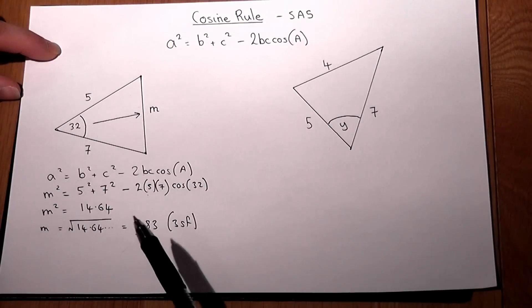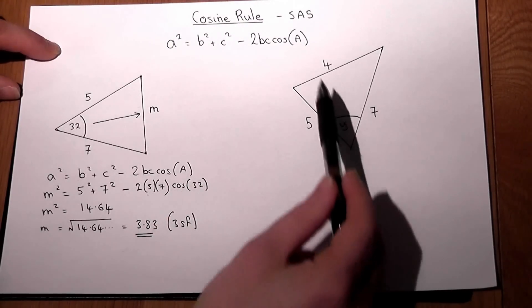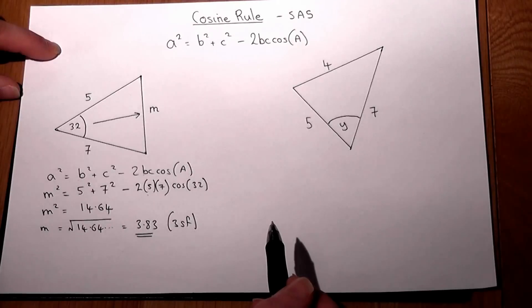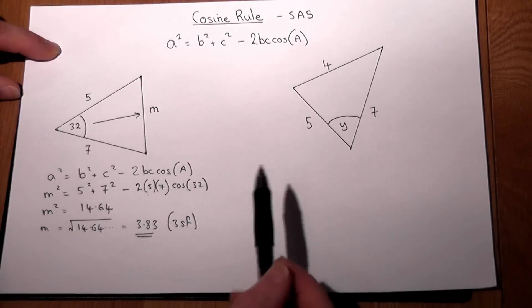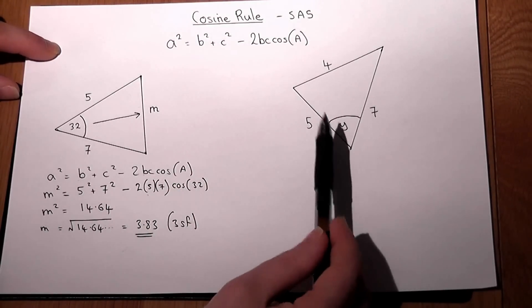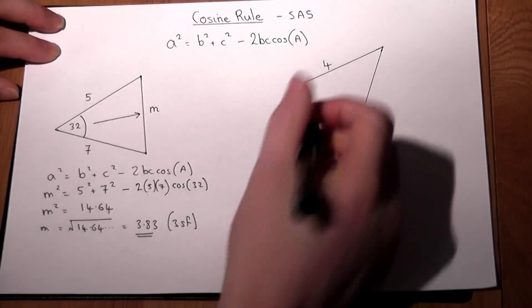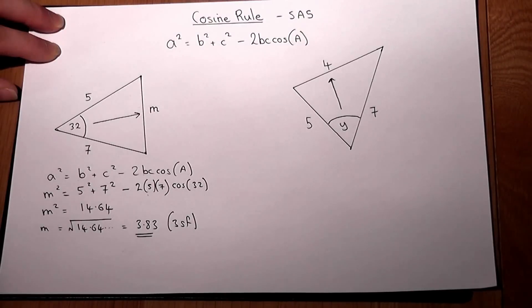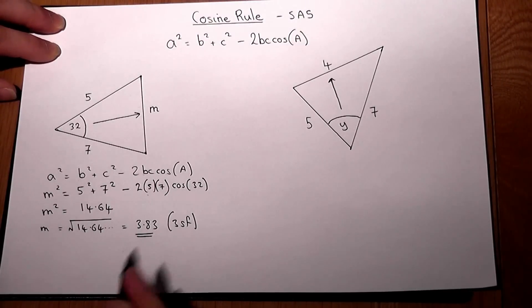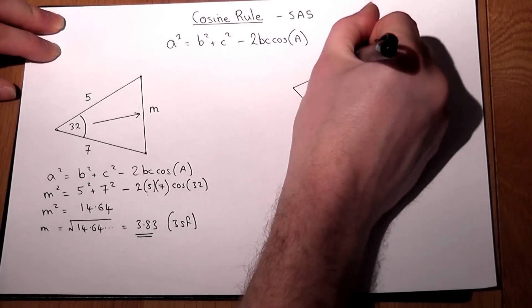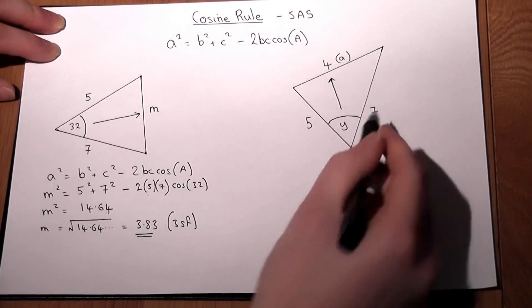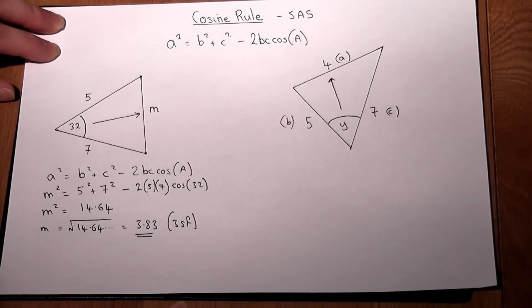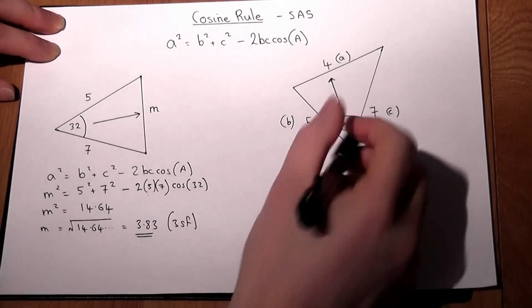We can also use the cosine rule to find an angle given three sides. The trick here is to identify in the rule which side is which. A is always the side opposite the angle in question — in this case Y. B and C are just the other two sides in any order, and A is the angle in question.